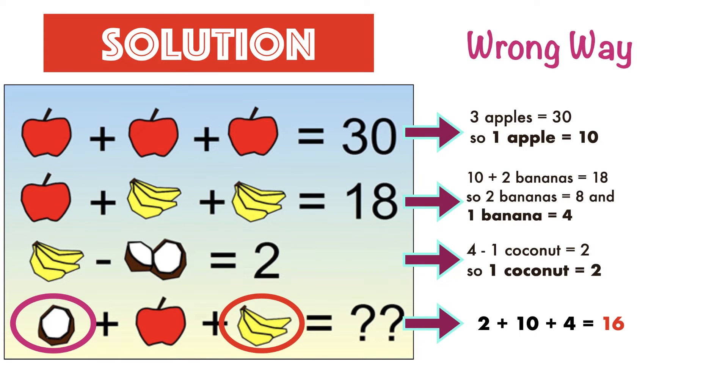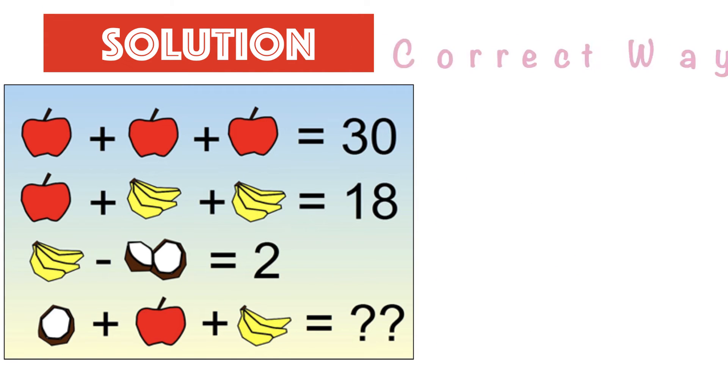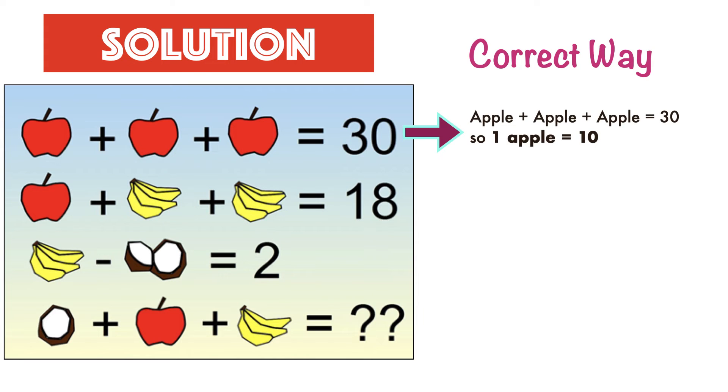So the correct explanation is: according to the first equation, apple plus apple plus apple equals 30, so each apple's value is 10. In the second equation, apple plus bananas plus bananas equals 18. Here we can assume each set of bananas equals 4, so 10 plus 4 plus 4 equals 18, and each banana equals 1 since there are 4 bananas in each bunch.